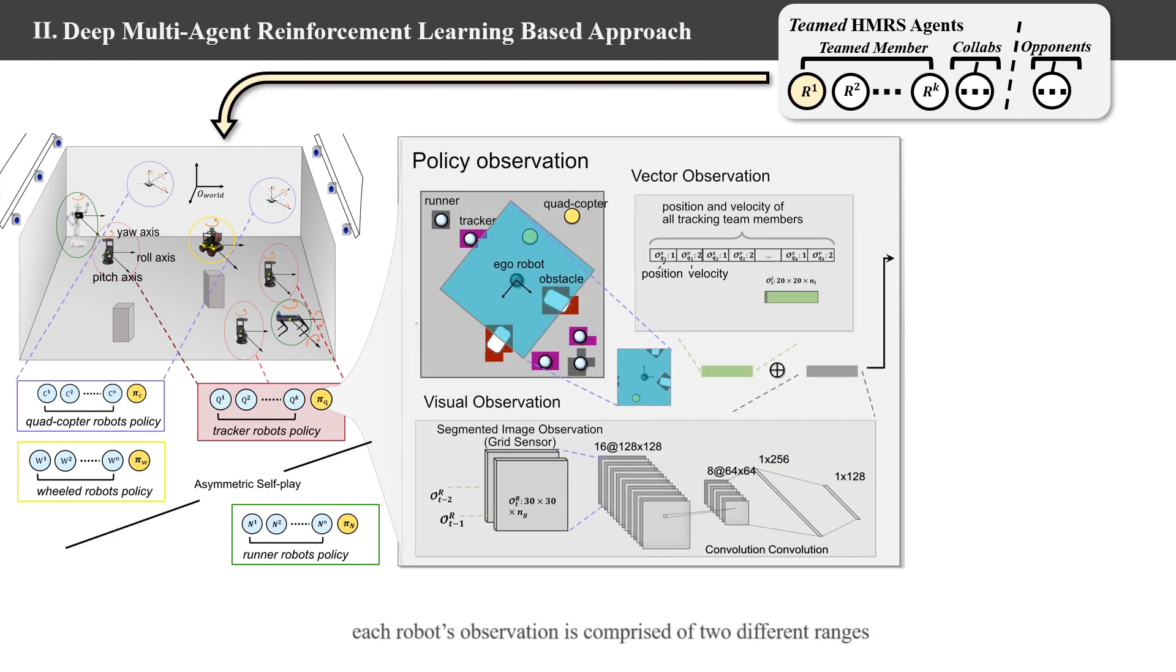Each robot's observation is comprised of two different ranges. First, zero range observations are stacked. Second, local range observation is represented by an image translating and rotating with the ego agent with objects encoded.